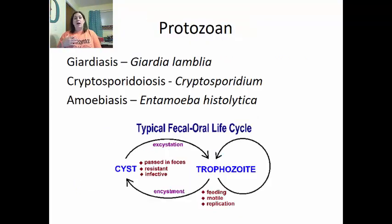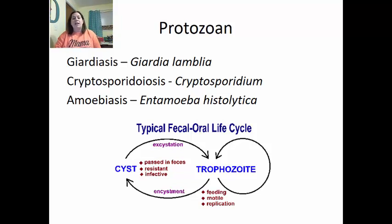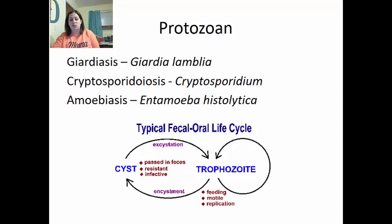Protozoan infections of the digestive system include giardiasis (Giardia lamblia), cryptosporidiosis (Cryptosporidium), and amoebiasis (Entamoeba histolytica). These organisms typically have a fecal-oral life cycle cycling between a cyst and a trophozoite. The cyst is passed in feces, is resistant and infective, and opens up to create the trophozoite — the feeding, motile, and reproductive stage. The trophozoite then encysts itself to be passed through feces and infect another individual.